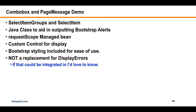We're going to use a Java class to aid in outputting Bootstrap alerts. Bootstrap has colored divs — red for danger, blue for info, green for success. We're going to use that. This Java class becomes an object that lives in request scope, because once it's been fed we want it to be done with — it's intended to be a response message to the user.